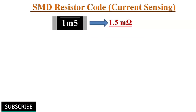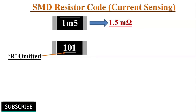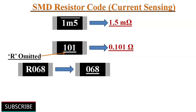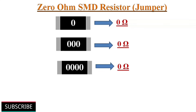Current sensing SMD resistors can also be marked with a long bar on top or a long bar under the code. For example, the code 1M5 with a long bar on top gives 1.5 milliohms. If an underline is used below the code, this indicates the starting letter R has been omitted due to limited space. So the code 101 with an underline represents 0.101 ohms, and the 4-digit code R068 becomes 068 with underline, denoting 68 milliohms. SMD resistors marked with all zeros are 0 ohm resistors, used as jumpers or shorting links on PCBs.